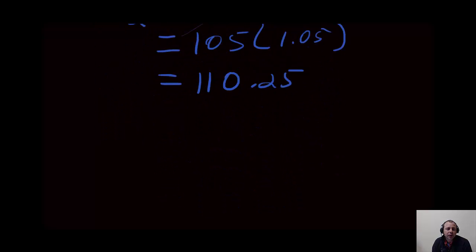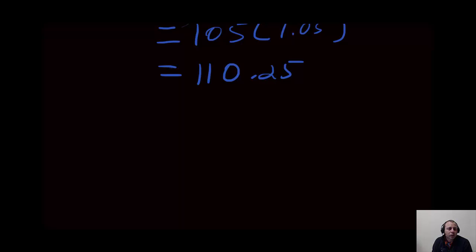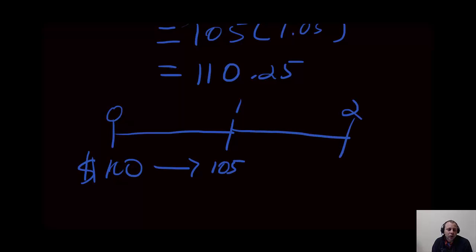In essence, what has happened here is that at time 0 you have deposited $100. At the end of the first year, that $100 has turned into $105. In the second year, we're not calculating interest based off of this $100.